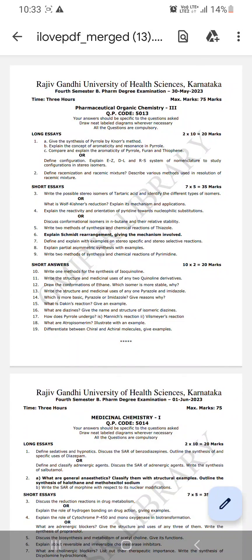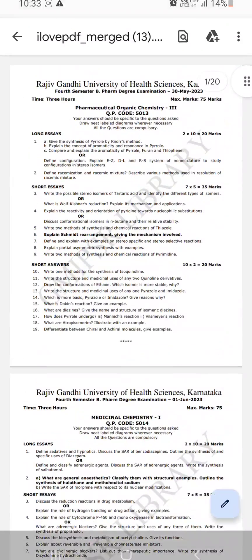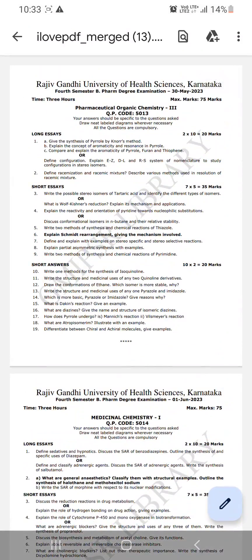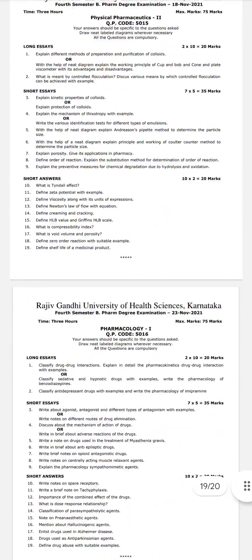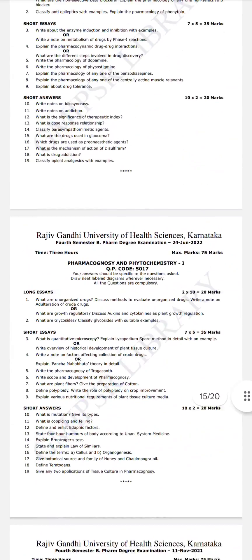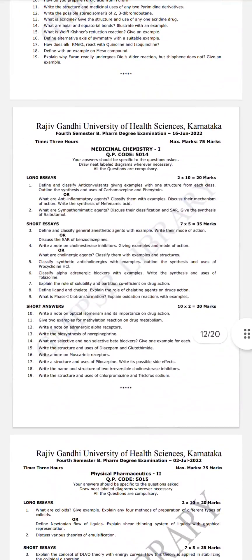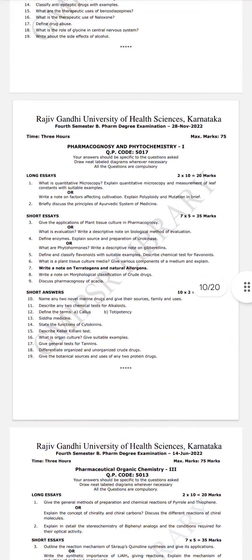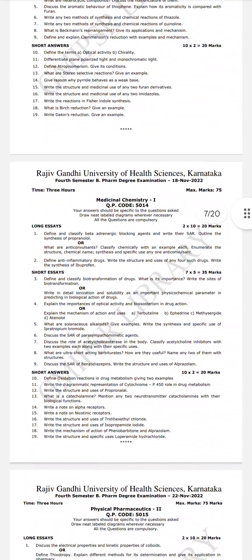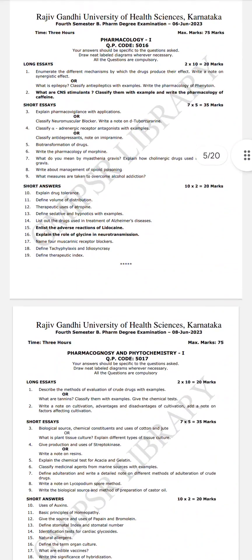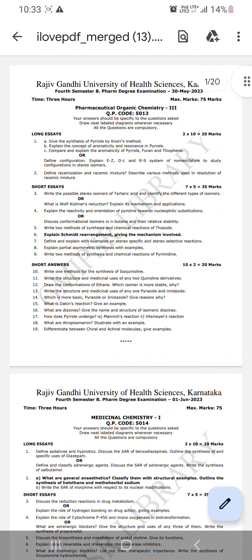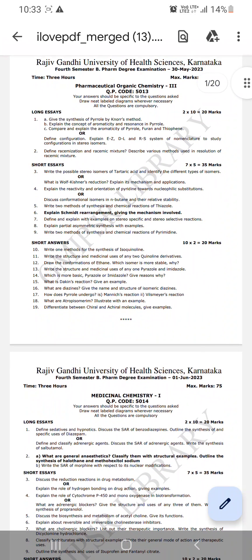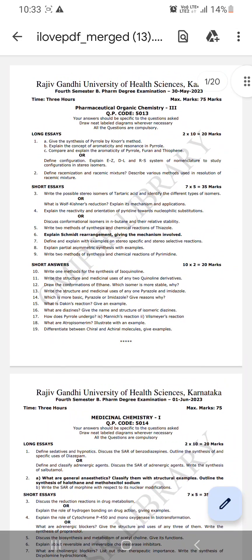These are the fourth semester B Pharmacy question papers. Totally four question papers are uploaded — four sets. One is of November 2021, another is July 2020, June 2021, next June 2022, then November 2022, then June 2023, and May 2023. These question papers are more than enough to pass your examinations.